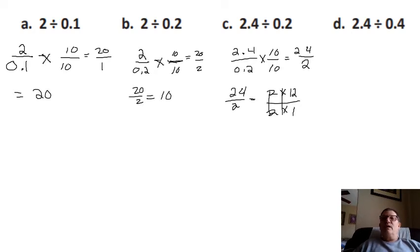Our last example here: we have 2.4 divided by 4 tenths and we're going to multiply this to get rid of the decimal. We can see we gotta multiply both by 10 again. That gives us 24 and 4, so now we got 24 divided by 4 equals 6.